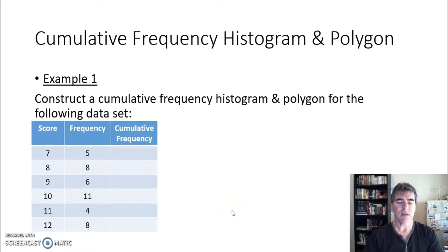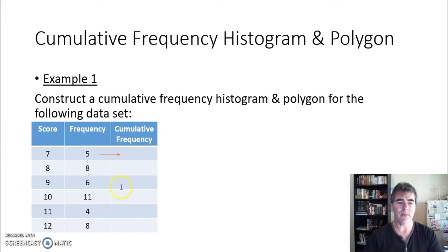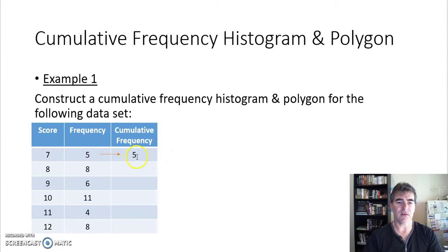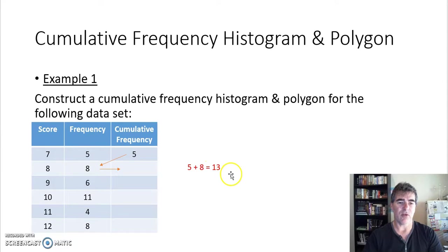To complete our cumulative frequency histogram, we've got a score of seven, and if we place all the scores in order there will be five sevens that I write down first of all. So the first five scores will all be sevens, so my cumulative frequency here, my progressive total for just the sevens, is five altogether. If I then count eights afterwards, there's eight eights, so if I've got five sevens and eight eights, then I'll add my five and eight.